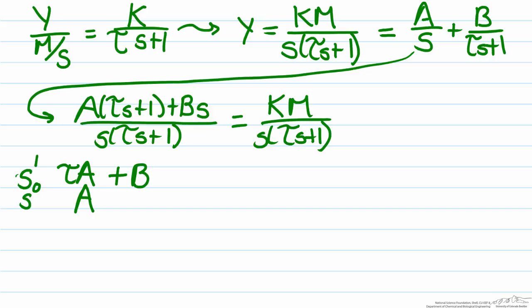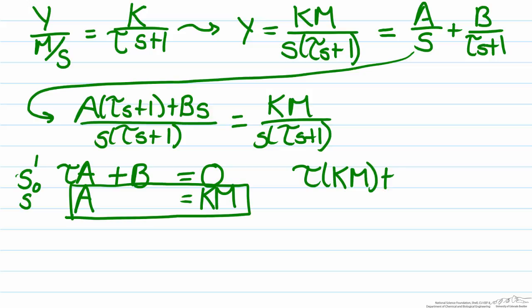So now we have to match this to what our right hand side is. So there is no s term, so therefore the s to the first term will just be zero, and our s to the zeroth term will have to equal km. Well this makes our mathematical lives not terribly difficult because we have already shown what a equals, a equals km, and what we then have is tau times km plus b equals zero, and that allows us to solve for b which is equal to negative km times tau.